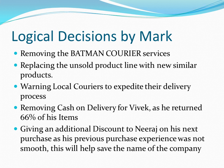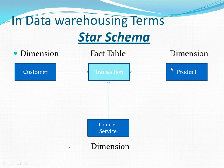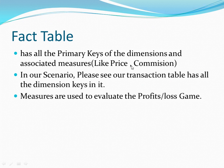If you want to understand this entire concept in terms of data warehousing, it's very simple. The three entities — customer, courier service, and products — are dimensions. The transaction table we saw is a fact table. The fact table has keys of all the dimensions and some additional columns which we call measures. Measures are used to evaluate the profit and loss game — for example, using measures I can calculate which product made how much money.